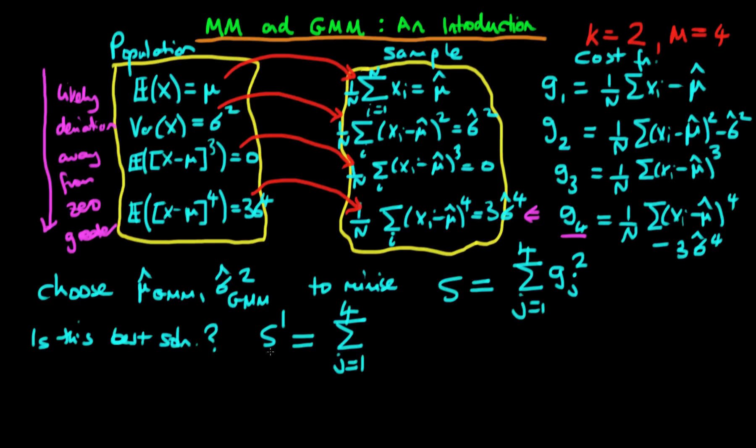So it might be better to minimize, or to choose mu hat GMM and sigma hat squared GMM, to minimize some square of the cost Gj times by some weighting function wj. Where in this case wj is sort of proportional to one over the variance of that particular moment condition which we're talking about here, or that particular cost function for that moment condition rather.